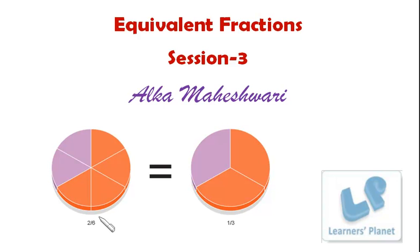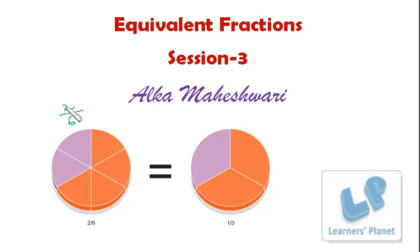Suppose here I show you this figure — one, two, three, four, five, six — six equal parts are there. Now out of six equal parts, two of them are pink. So the pink is two by six fraction of the whole. Of whole means of one.